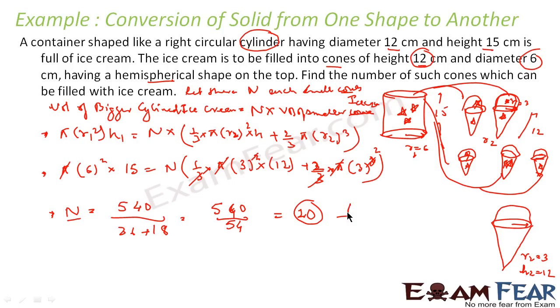There is no unit because it is a number. So there are 10 ice creams that can be formed. From this bigger ice cream that is cylindrical in shape, we can get 10 such smaller ice creams, which are cone plus hemisphere. Just understand, when you change the shape from cylinder to cones, the volume is constant and that is what I am doing.